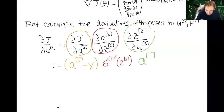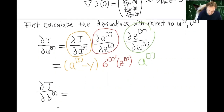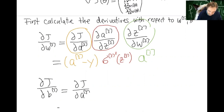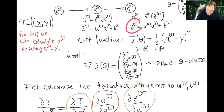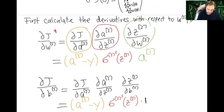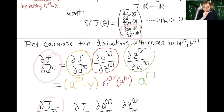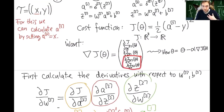Similarly, for ∂J/∂b2 the idea is exactly the same: ∂J/∂b2 = (∂J/∂A2) · (∂A2/∂Z2) · (∂Z2/∂b2). The only difference is that the derivative of Z2 with respect to b2 is just 1, so ∂J/∂b2 = (A2 - y) · sigma2'(Z2). And therefore we have these two entries for the last layer.